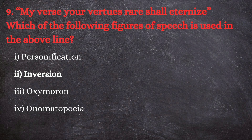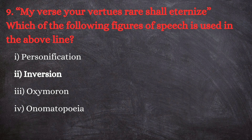Next question: 'My verse your virtues rare shall eternize' — which of the following figures of speech is used in the above line? Options are: first, personification; second, inversion; third, oxymoron; fourth, onomatopoeia. The correct answer is inversion. In the line 'my verse your virtues rare shall eternize,' the phrase 'virtues rare' shows an inverted grammatical order — instead of 'rare virtues,' 'virtues rare' is used, making it a case of inversion.